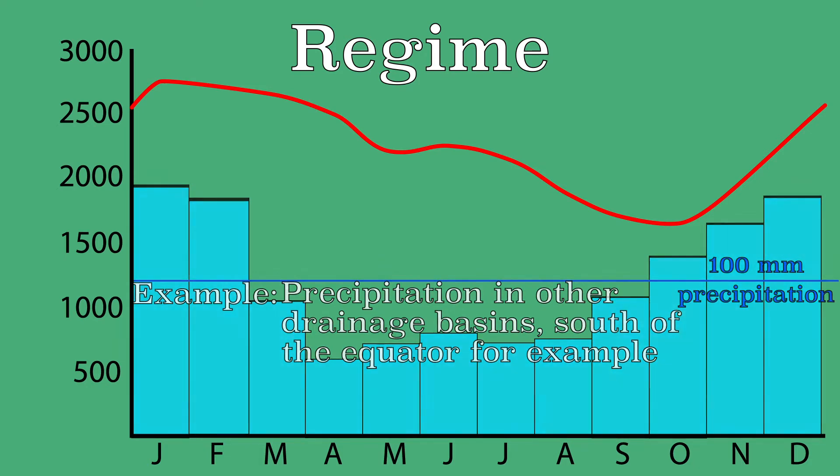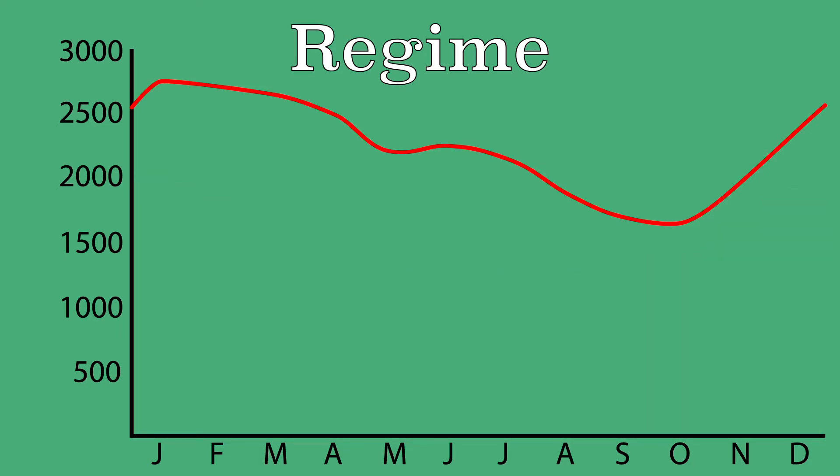A long rainfall season or drought in the drainage basin can cause a temporary deviation from the regime. The water level can then be much higher or lower than expected.